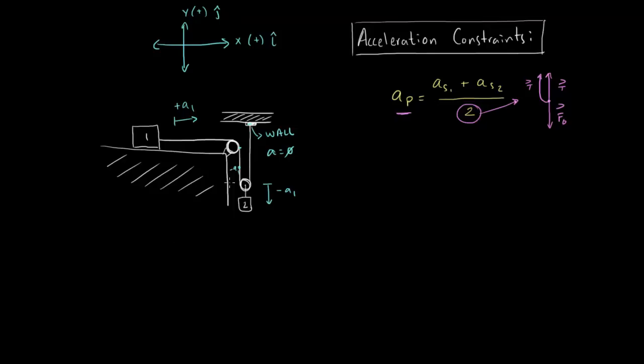So, we know that the acceleration of this movable pulley, let's just call it pulley A, so the acceleration of pulley A is going to equal the sum of its strings, so we already said that a1 plus 0, right, divided by 2.